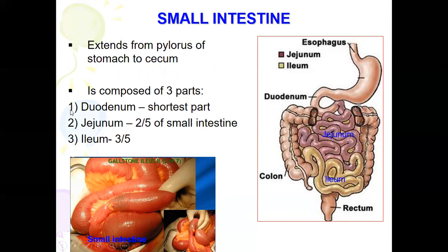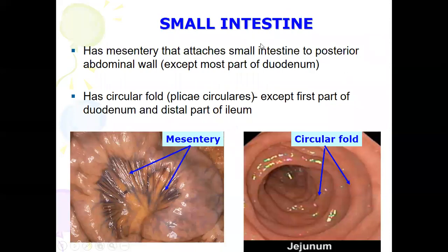The small intestine is composed of three parts: the duodenum, the jejunum, and the ileum. The duodenum is the shortest part. The jejunum makes up two-fifths and the ileum three-fifths of the small intestine. The small intestine has a mesentery that attaches it to the posterior abdominal wall, except most of the duodenum.